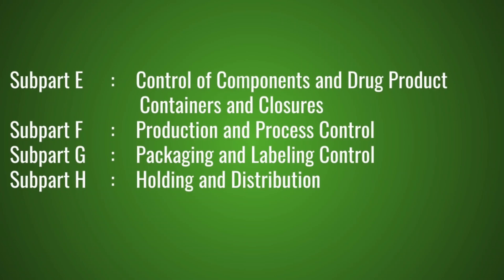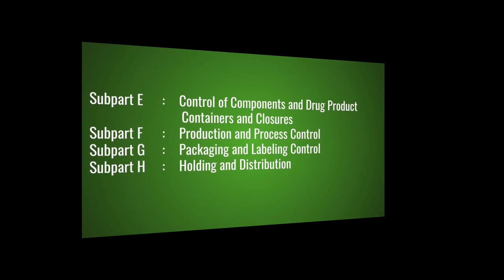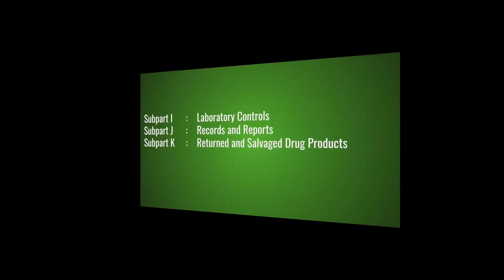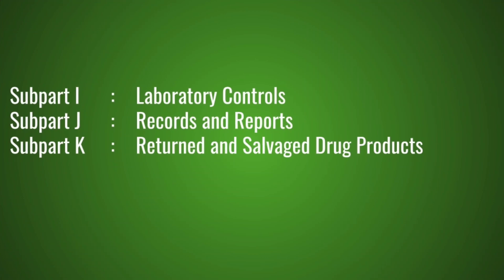Subpart E: Control of Components and Direct Product Containers and Closures. Subpart F: Production and Process Control. Subpart G: Packaging and Labeling Control. Subpart H: Holding and Distribution. Subpart I: Laboratory Controls. Subpart J: Records and Reports. Subpart K: Returned and Salvaged Drug Products.